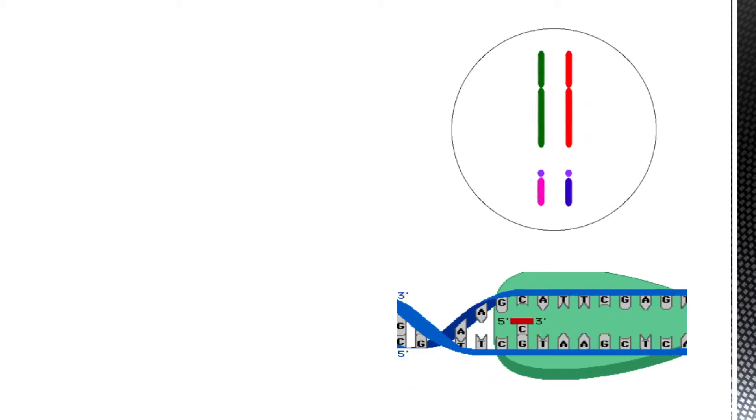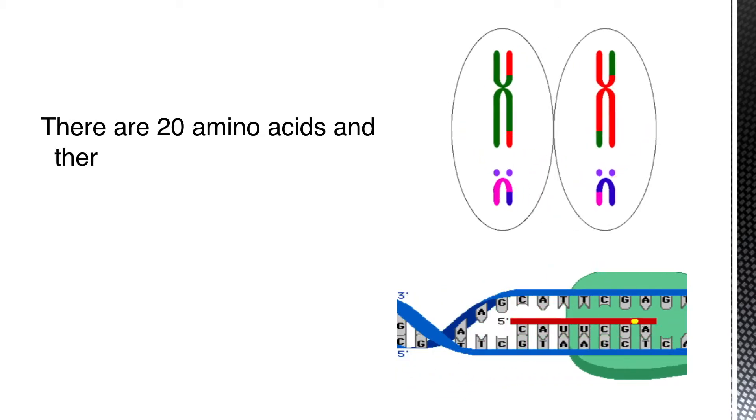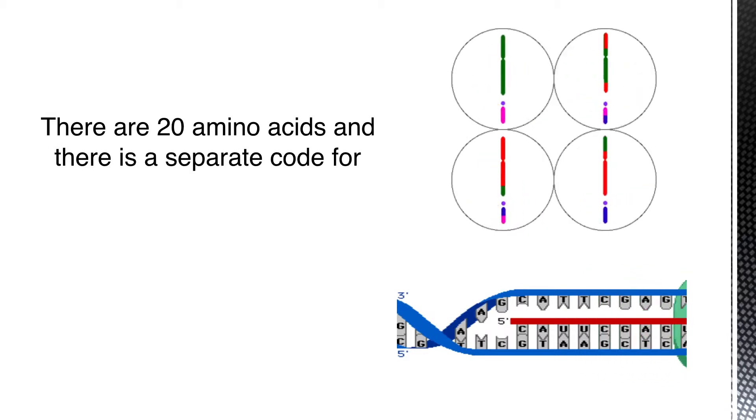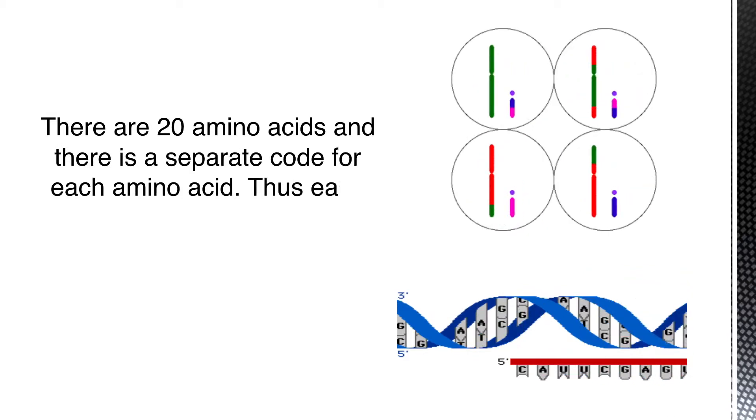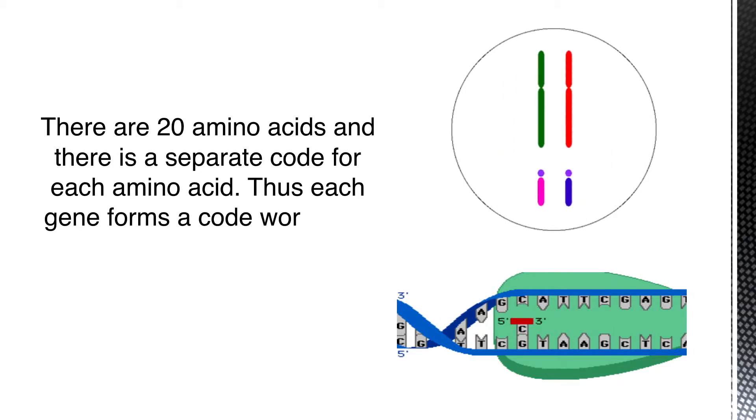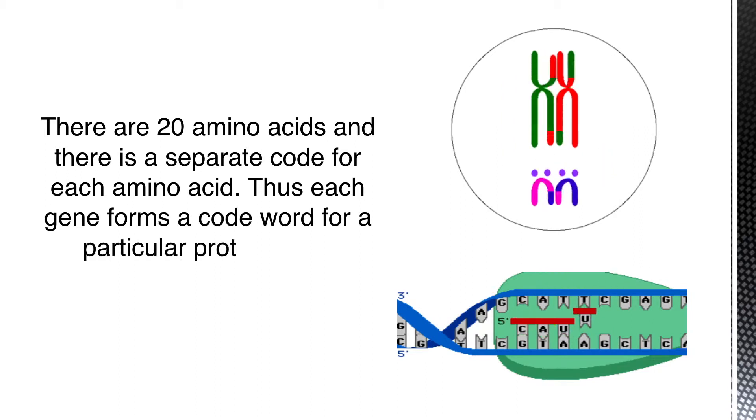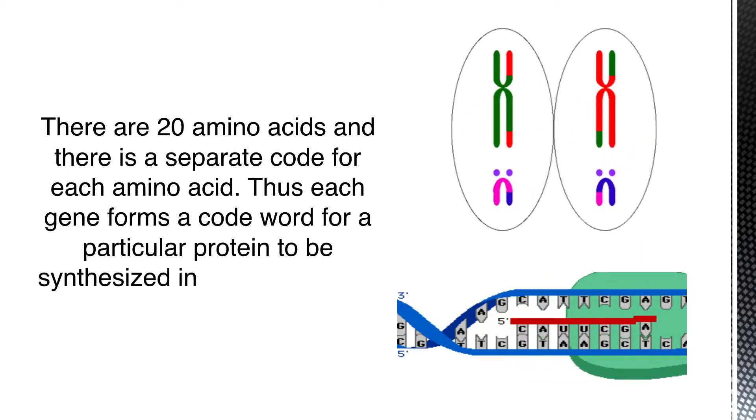There are 20 amino acids and there is a separate code for each. Thus, each gene forms a code word for a particular protein to be synthesized in the ribosome from amino acids.